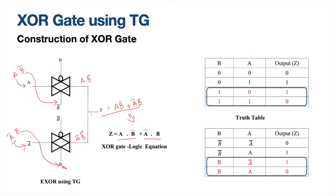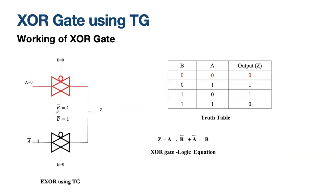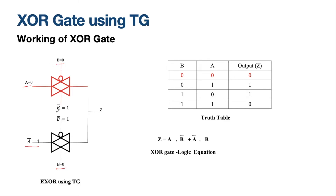This is how we assign input variables and control variables for an XOR gate. Now let us verify by assigning 0s and 1s to check whether these assignments are correct. For the first combination, A equals 0 and B equals 0 — the expected output is 0. A is equal to 0, so A_bar is equal to 1. B is equal to 0, so B_bar will be equal to 1.